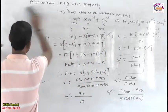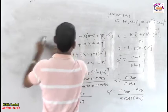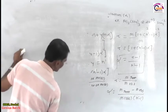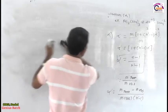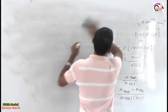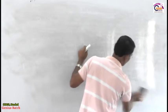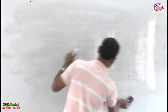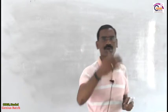These are very interesting concepts related with abnormal colligative property. Now I am going to discuss the next very important part of this topic — some problems related with the abnormal colligative property.